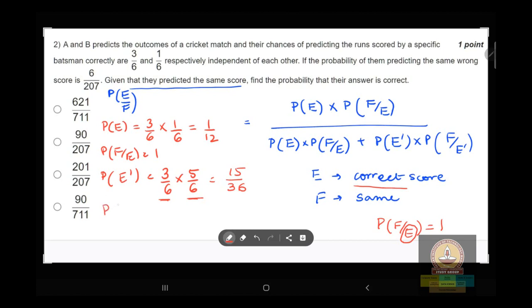So this means that an answer is wrong. What will be the probability that the answer predicted, the wrong answer predicted, is same? It is already given that the probability of them predicting the same wrong score is 2/6.